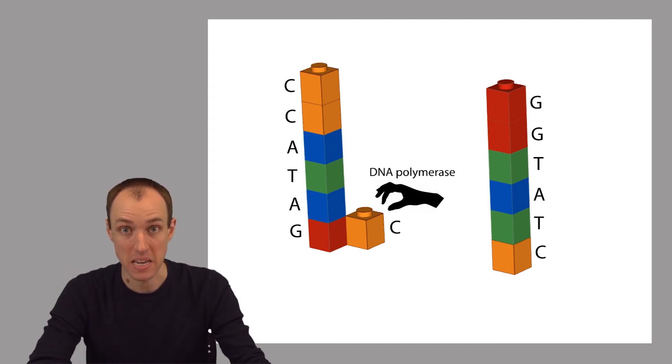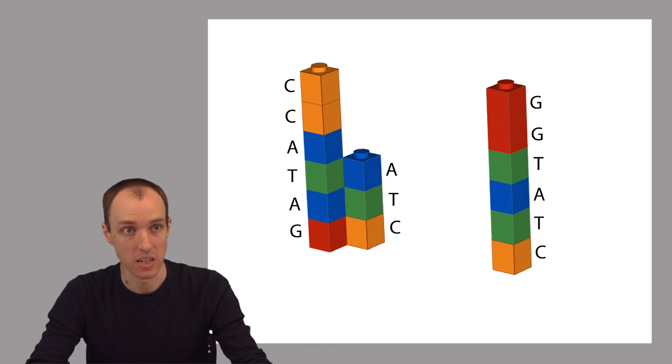This results in a double-stranded copy of the template strand. For example, the DNA polymerase might integrate this C nucleotide here and then it'll move on and integrate a T nucleotide here because T is complementary to A, and then an A nucleotide here and a T and a G and a G and so on.